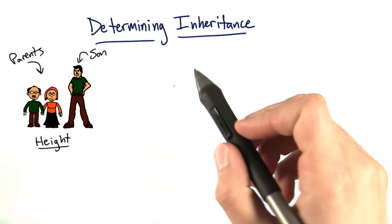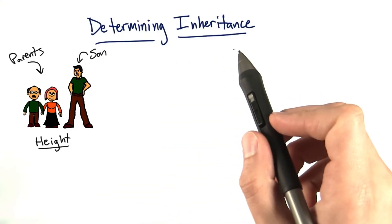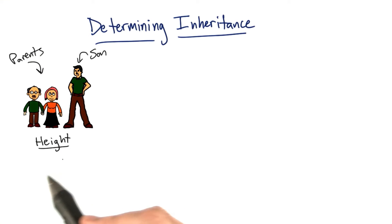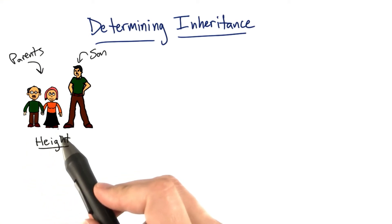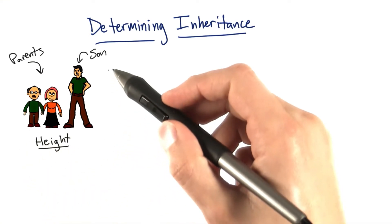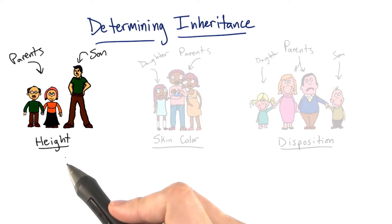Trying to figure out how certain traits are inherited can be really difficult. Sometimes we have a trait like one of our parents or the other, and other times we have a trait not like our parents at all.